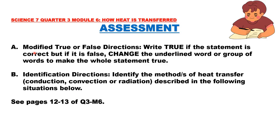Assessment, Part A. Modified true or false. Write true if the statement is correct. But if it is false, change the underlined word or group of words to make the whole statement true. And Part B, Identification. Identify the method or methods of heat transfer — conduction, convection, or radiation — described in the following situations below. See pages 12 to 13 of Quarter 3, Module 6.